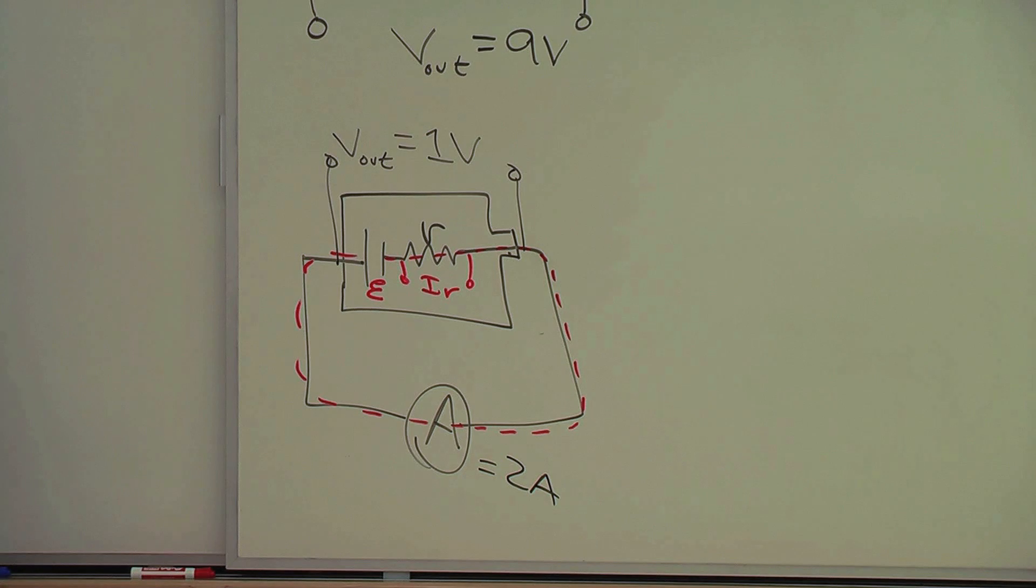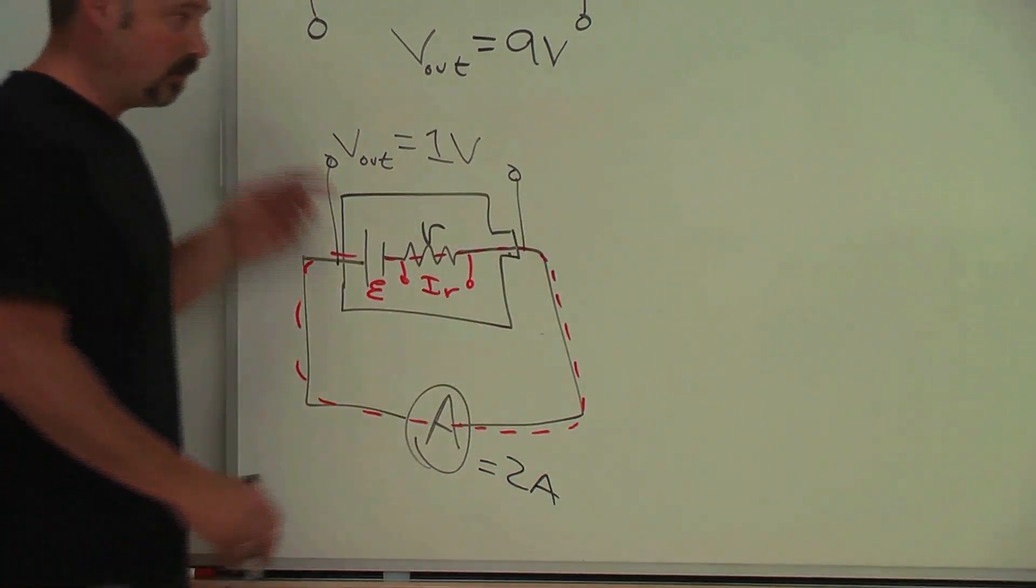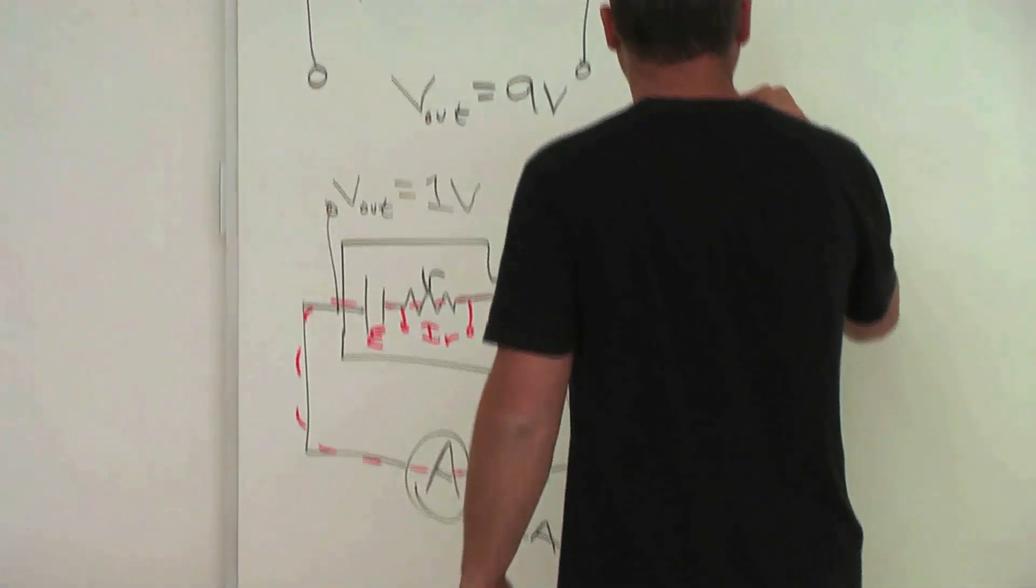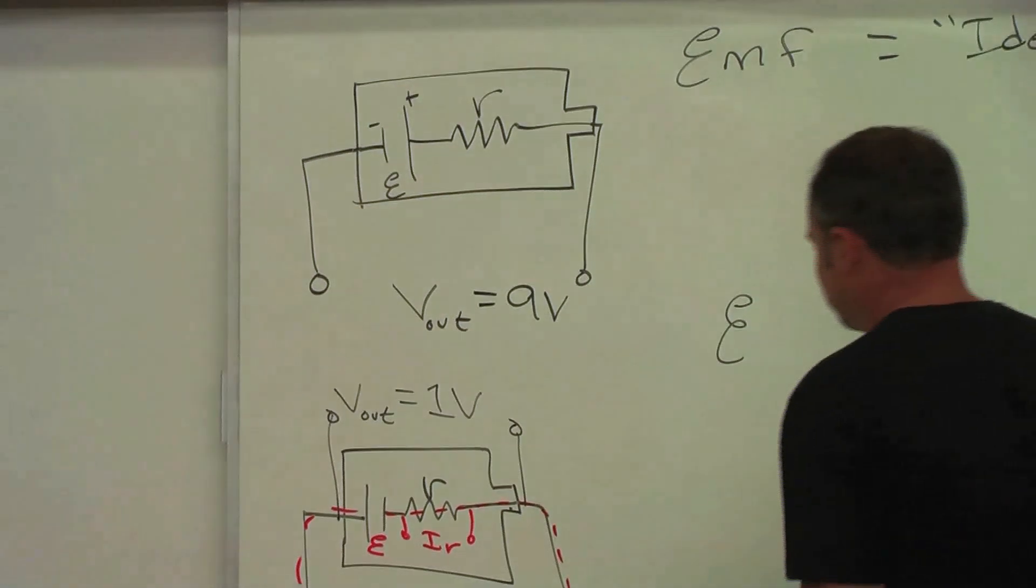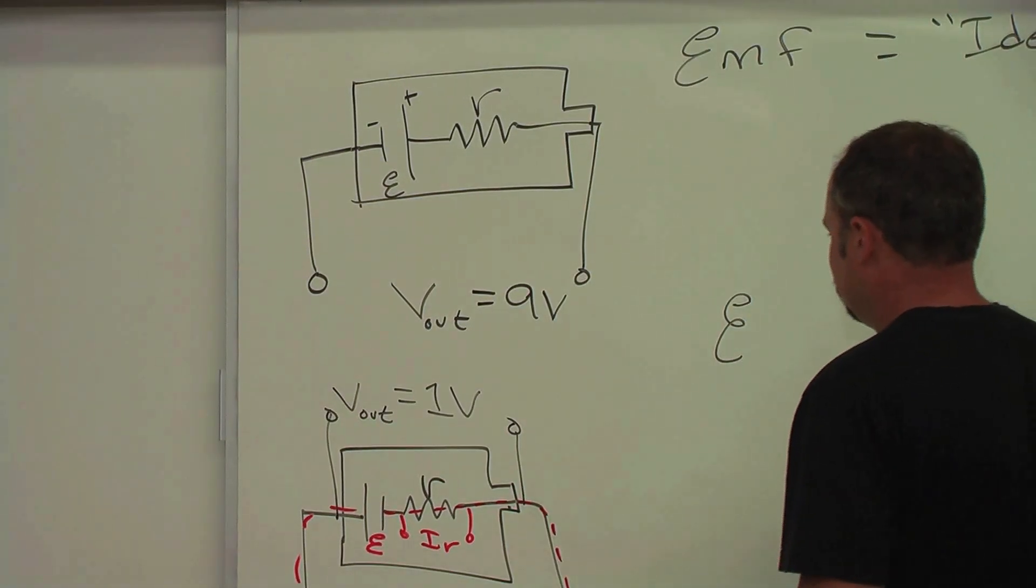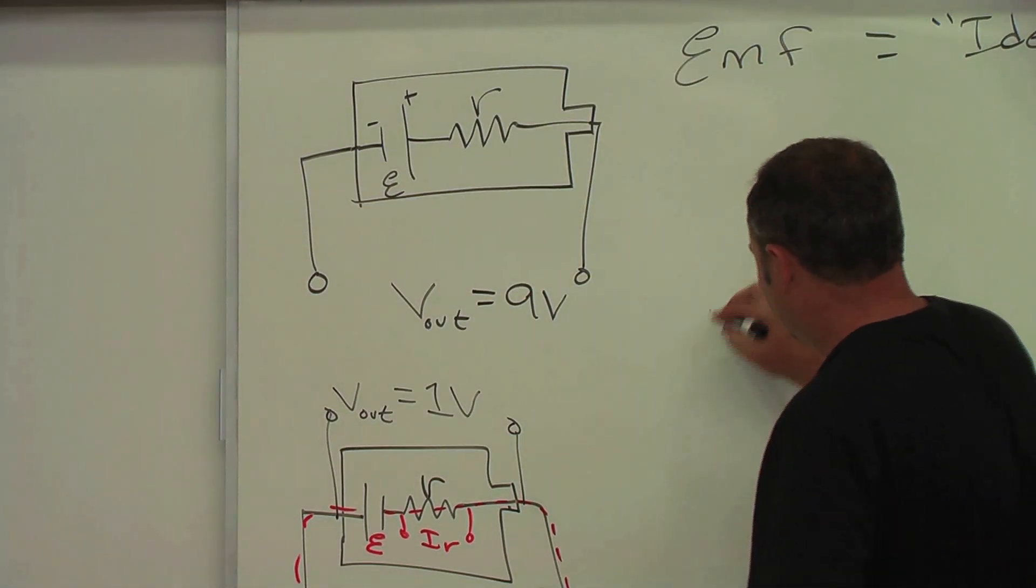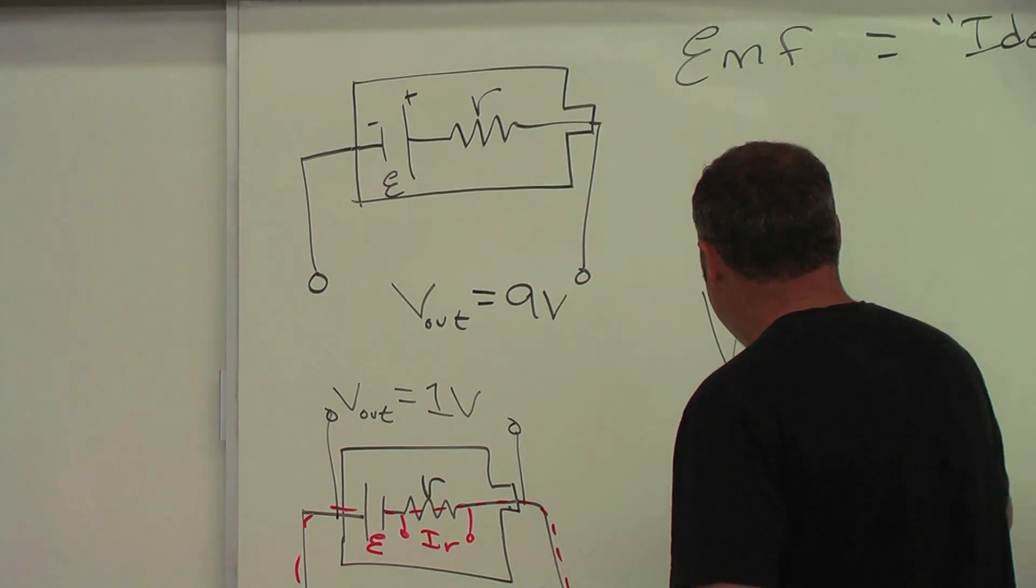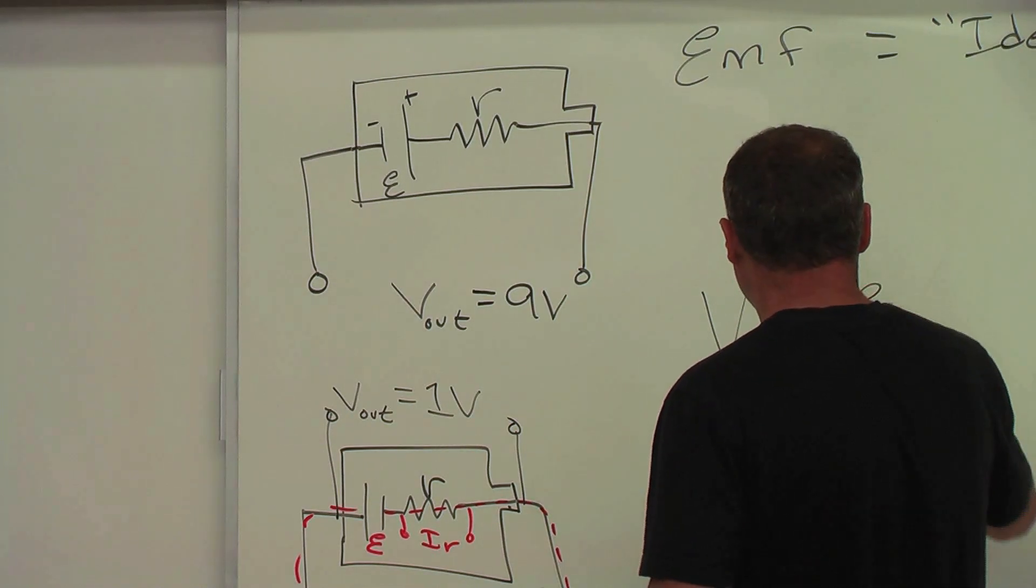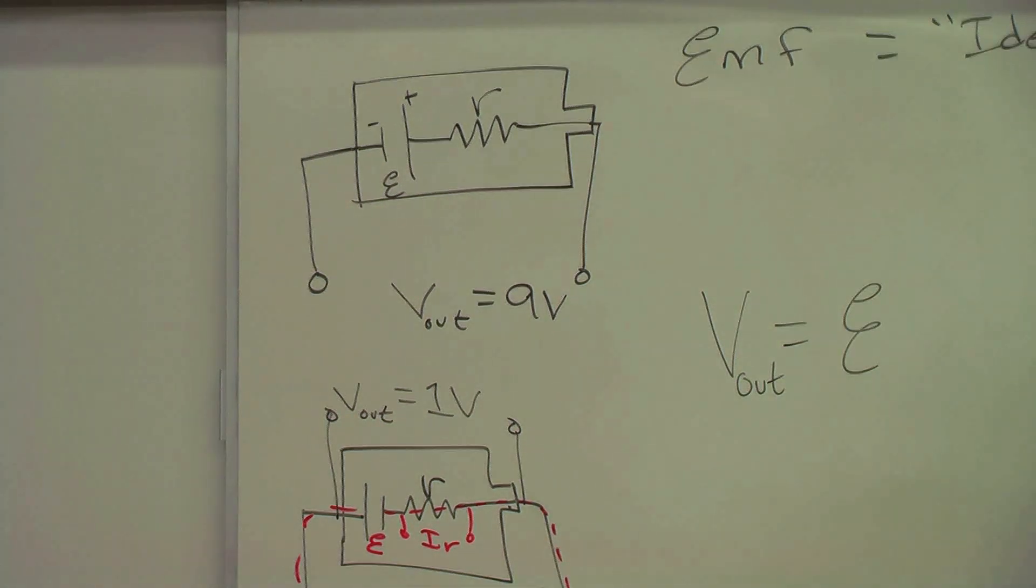So if we take our circuit around the loop, we get that the electromagnetic force, well, let me write it like this: the V out equals the ideal voltage, the EMF, minus this voltage drop here.